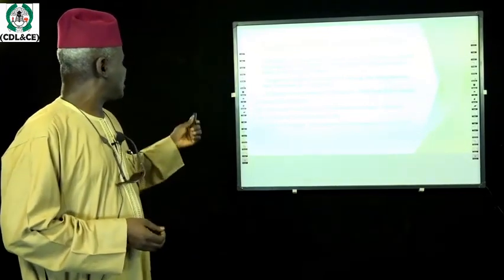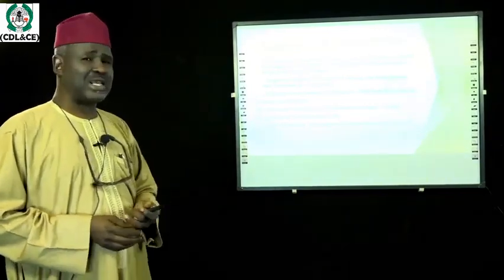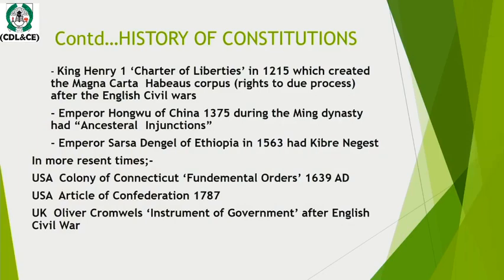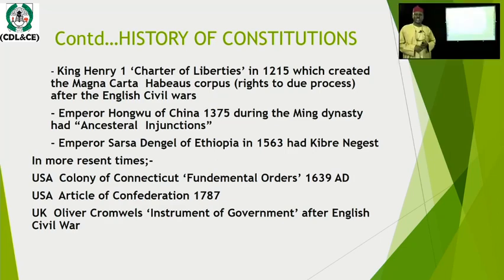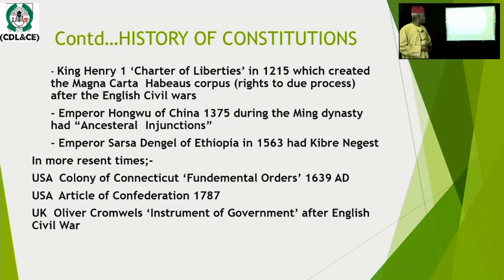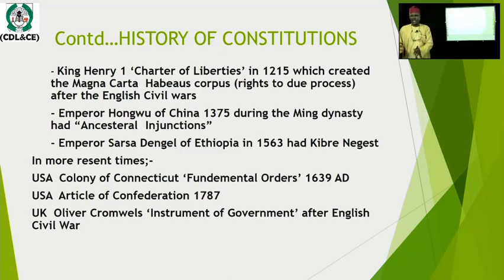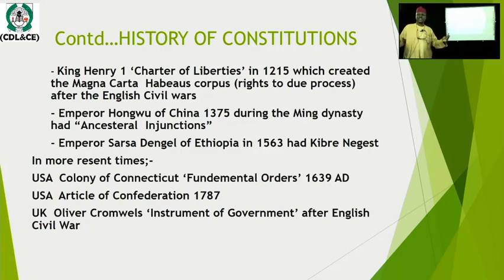In Africa, we have the example of Emperor Sarsa Dengel of Ethiopia, who as far back as 1563 had constitutions — the first one being the Kibri Negest. There were two others after it before they started documented constitutions. This was not a documented constitution, but a set of laws accepted by the emperor, the ruling families, the elite families, and the common man and peasants. So we can see that constitutions have existed over periods of time in our society.